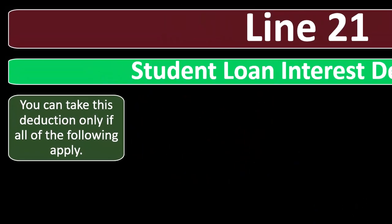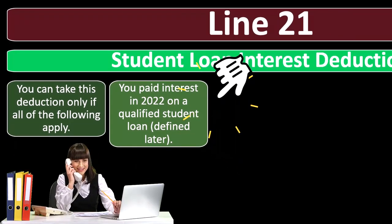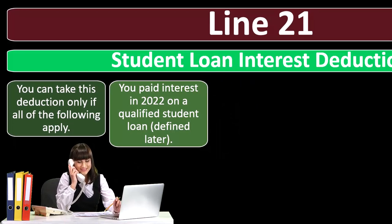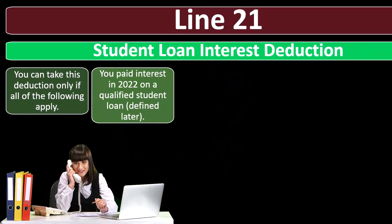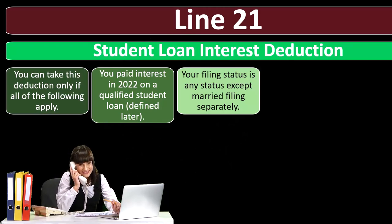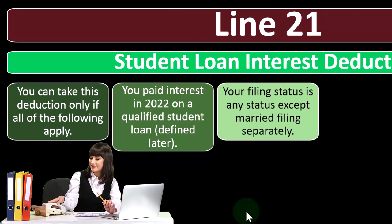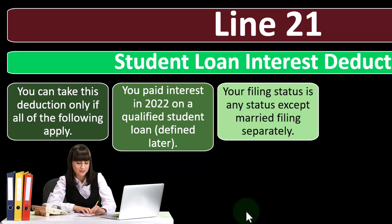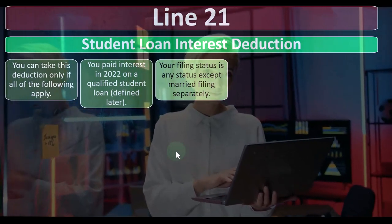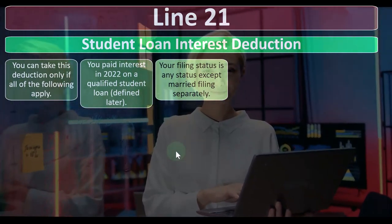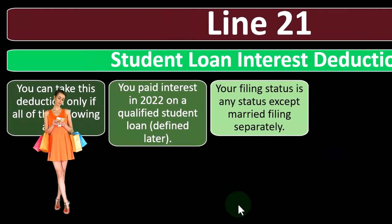Line 21 is the Student Loan Interest Deduction. You can take this deduction only if all of the following apply: you paid interest in 2022 on a qualified student loan — typically you'll receive documentation for this. A qualified student loan generally means a loan taken for higher education. Your filing status must be anything except married filing separately. If you're married and file separately, the IRS is quite skeptical of that approach.